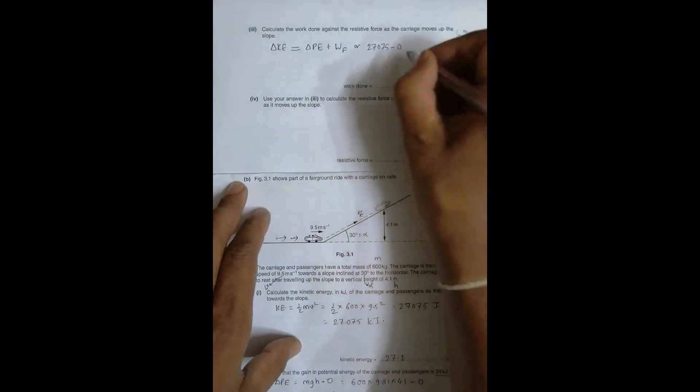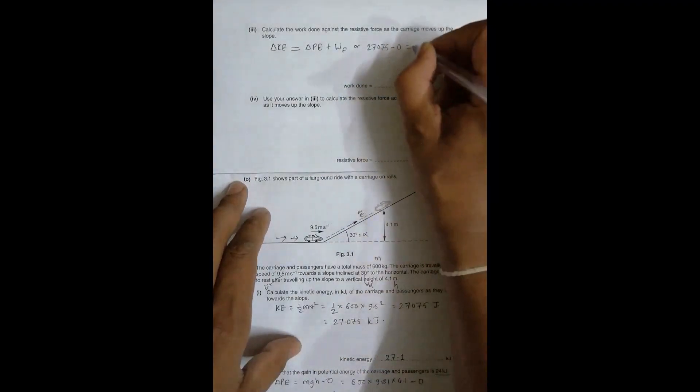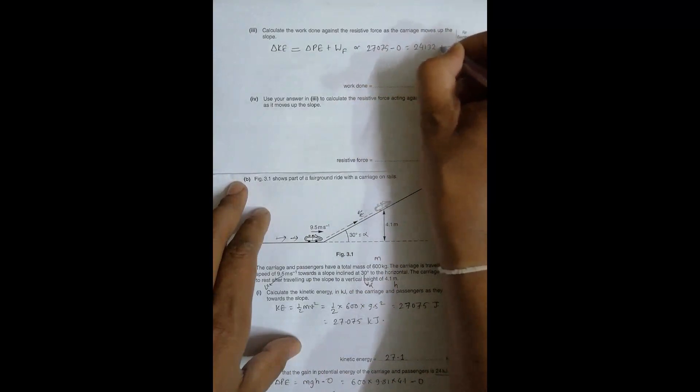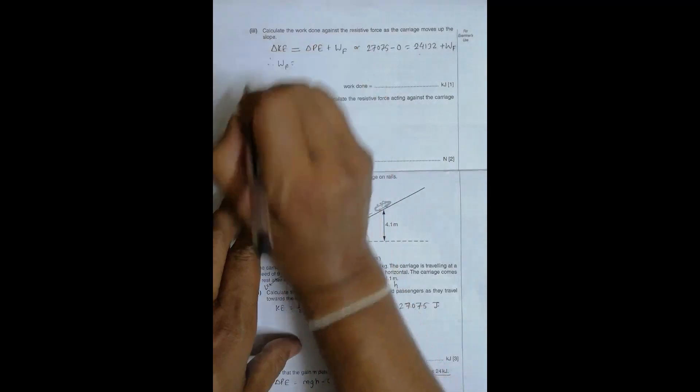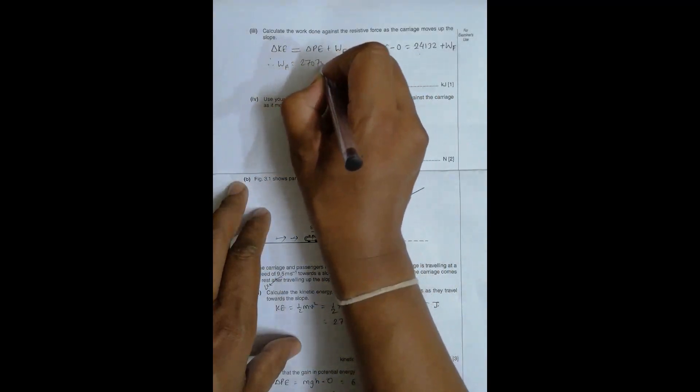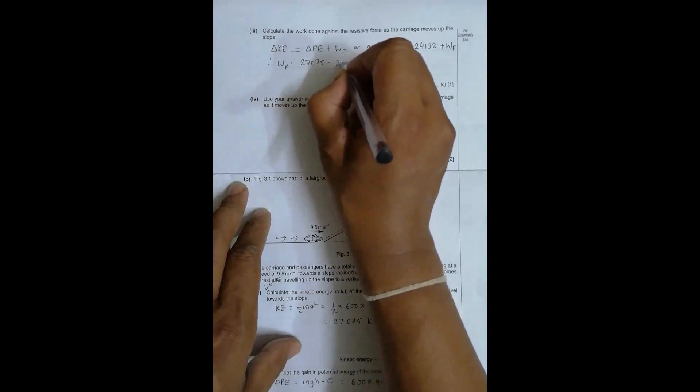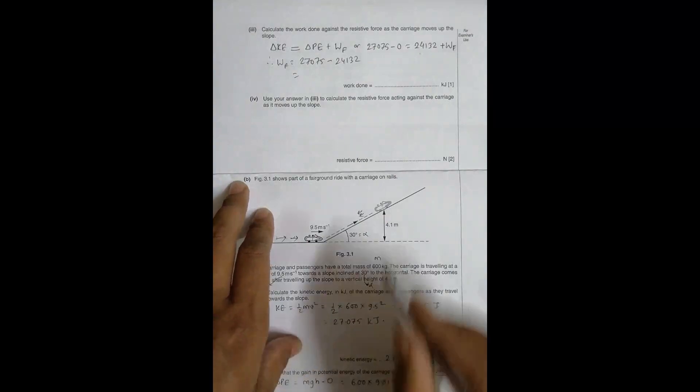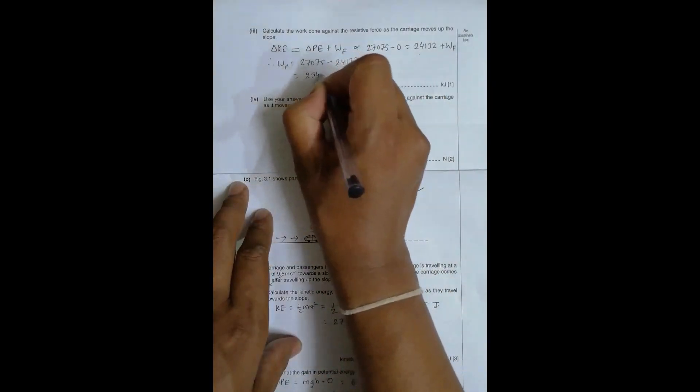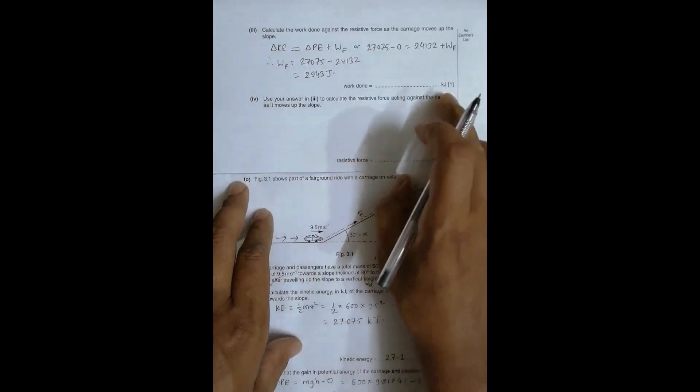Therefore, WF = 27,075 - 24,132, and this becomes equal to 2,943 joules. Now I have to express this in kilojoules, which would be 2.943 kilojoules, or 2.94 kilojoules to 3 significant figures.